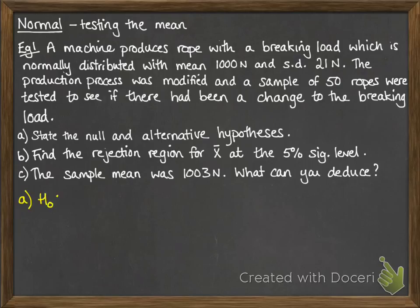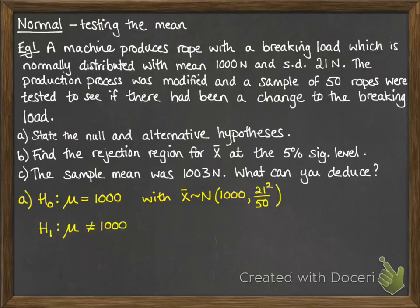So first of all, part A: the null hypothesis is assuming that the mean is equal to 1000, in other words it hasn't changed. So then the distribution for the mean would follow a normal distribution with a mean of 1000 and the variance is 21 squared over 50, with 21 being the standard deviation originally and 50 the size of the sample. So our alternative hypothesis is that the mean has changed. We don't know if it's an increase or decrease, we just are testing whether it's not equal to 1000 anymore.